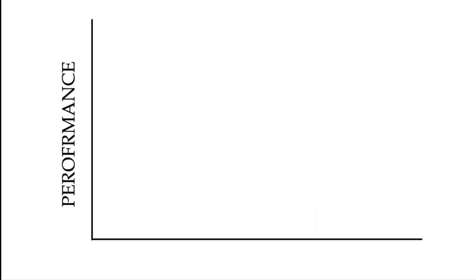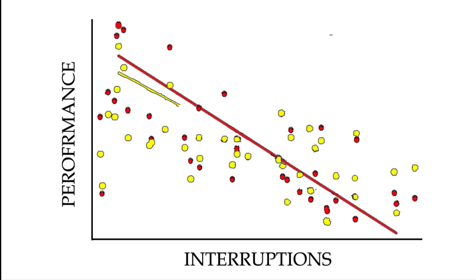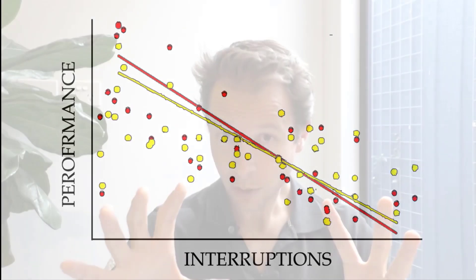But do they actually impact learning? The researchers correlated school-wide performance data on standardized tests of math and English with the number of external interruptions each school had. In math, there was a negative 0.53 correlation, and in English a negative 0.48. We have to remember that correlation doesn't mean causation — we can't say external interruptions are why kids are doing worse — but there is a pretty consistent pattern: the more interruptions a school has, the worse global learning seems to be.